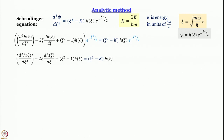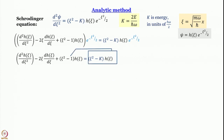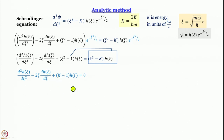We can simplify further: the third term on the left-hand side and the term on the right-hand side both contain h and ξ². We combine these two terms to cancel ξ². Taking the right-hand side ξ² minus k times h to the left, and subtracting ξ² from h·(ξ²−1), the ξ² terms cancel. The sign of k becomes positive, giving us the equation: d²h/dξ² minus 2ξ·dh/dξ plus (k−1)·h = 0.